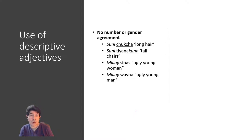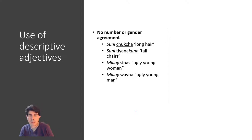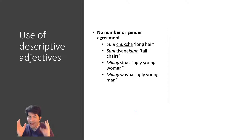So 'suni chukcha' means long hair, and 'suni tiyanacuna' means tall chairs. You can also say 'mili' for ugly — 'milia sipas' or 'miliai huayna' — and the adjective remains the same 'miliai' even though 'sipas' is feminine and 'huayna' is masculine. In Quechua there are no suffixes or particles that indicate masculine or feminine. You use words that have that meaning incorporated, like 'sipas' meaning young woman or 'huayna' meaning young man.